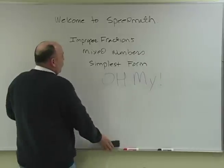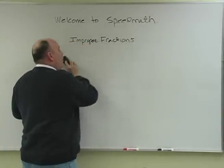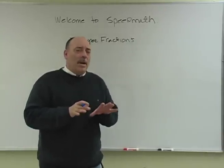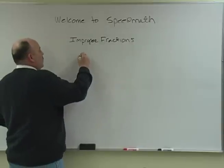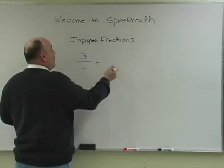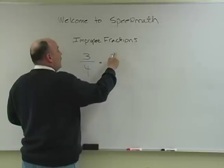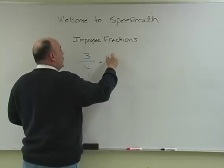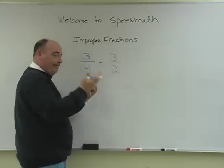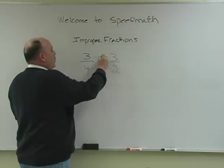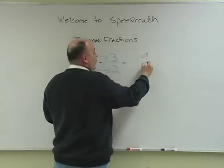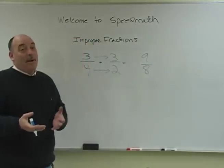So let's start off with improper fractions. In our previous lesson we had an answer — we were multiplying fractions and dividing them and one of our answers ended up as an improper fraction. So let's do an example here: we've got 3 over 4, times 3 over 2. Now we know when we multiply we go straight across for the numerator and straight across for the denominator. So our answer here is going to be 9 over 8. This is an improper fraction.